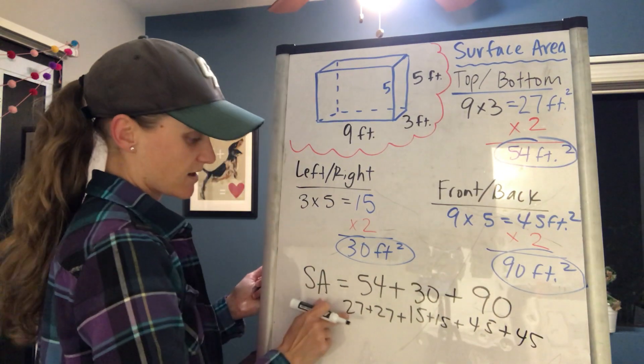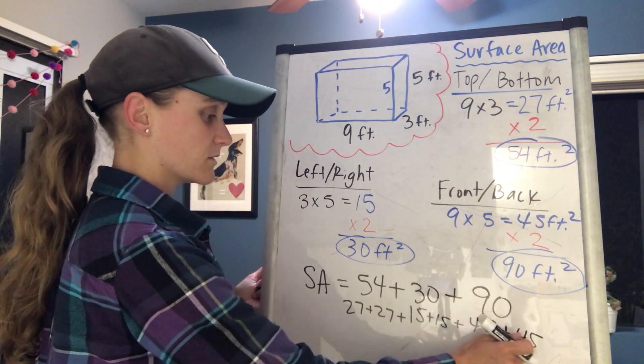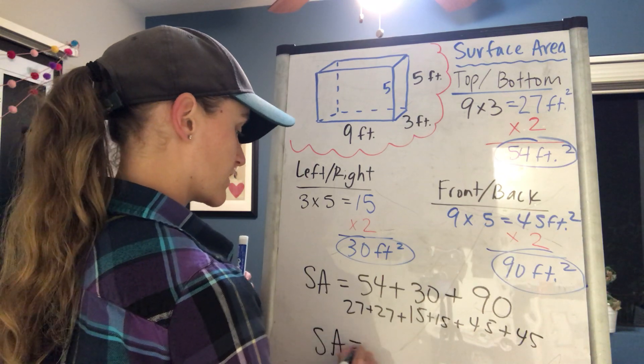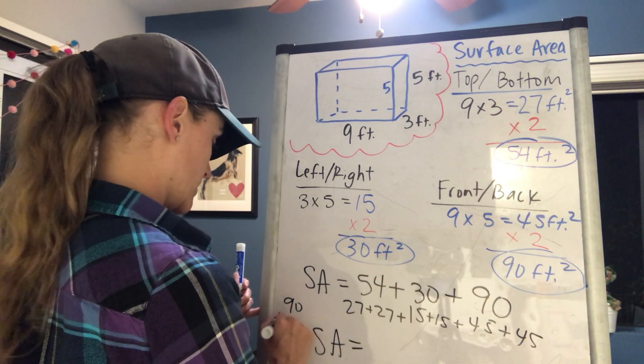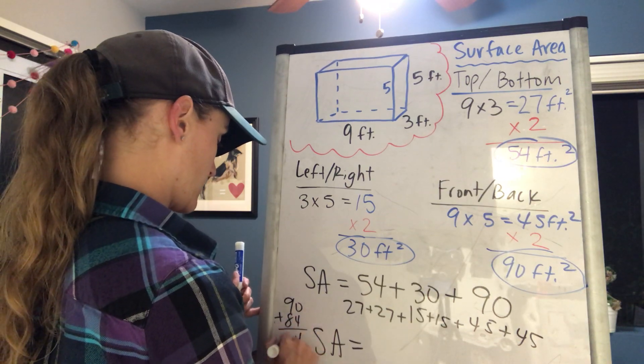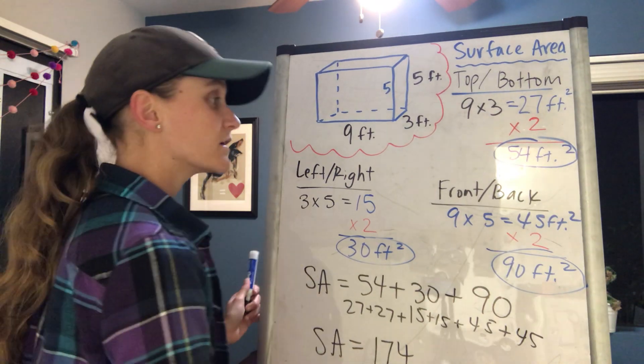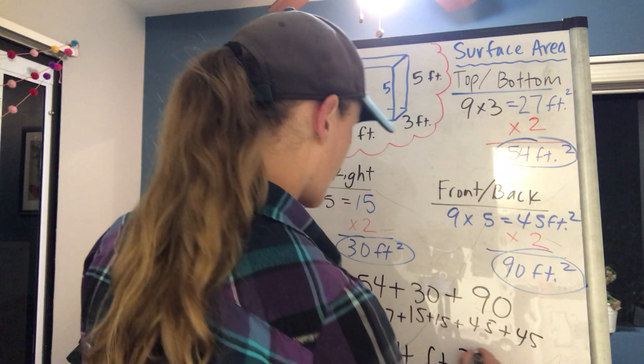So if I add those all up, the total surface area is going to be 90 plus 84, which means that the answer is 174, and it's going to be feet squared.